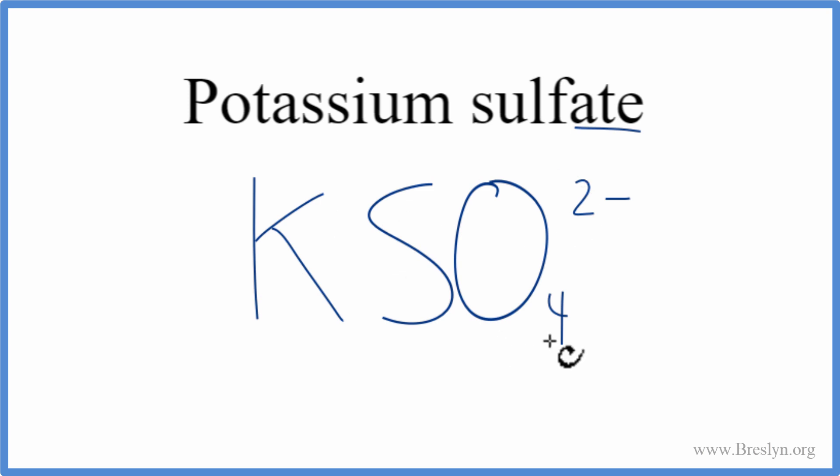Potassium's a metal, and then the sulfate, that's made up of a group of nonmetals. Metal and nonmetals, that's ionic. So we need the charges on the potassium and the sulfate to add up to zero, to give us a net charge of zero, since potassium sulfate, that's a neutral molecule.